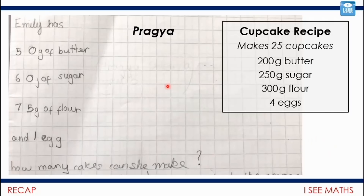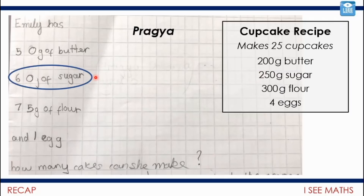I noticed something interesting about how these questions were designed. All of the amounts apart from one are a quarter of the recipe: 200 grams of butter → 50 grams is a quarter; 300 grams of flour → 75 grams is a quarter; one is a quarter of four eggs. But 60 grams compared to 250 grams: four lots of 60 is 240, which is less than 250. So the limiting ingredient is sugar — Emily will run out of sugar first.